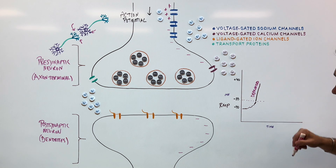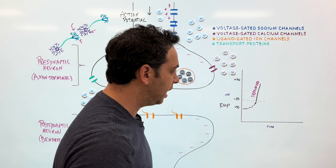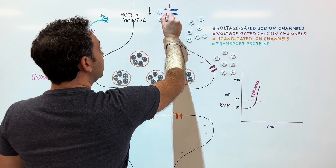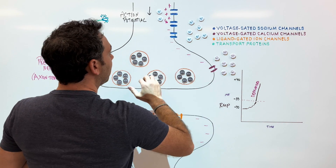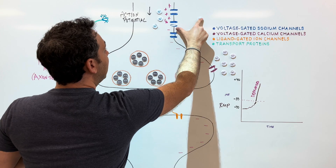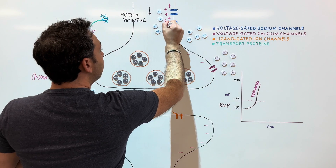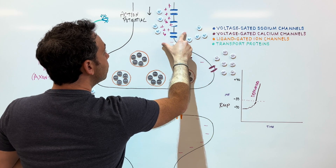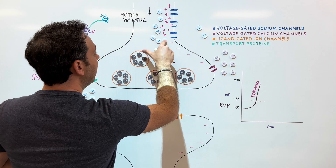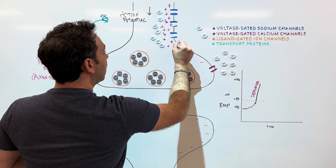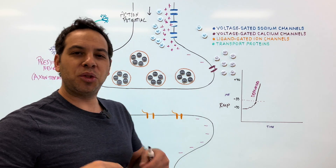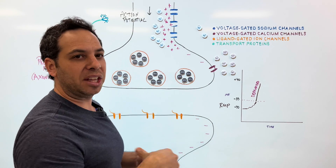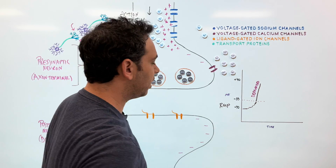I have an extra video on the entire action potential process — I'll put the link above. But this is a nice brief overview. What happens next is that this depolarization talks to the next voltage-gated sodium channel, which opens up, more sodium enters the cell, making it more positive. Then the next one opens, more sodium enters — and you get the idea. This is basically what an action potential is: a depolarizing wave that travels the length of the neuron.